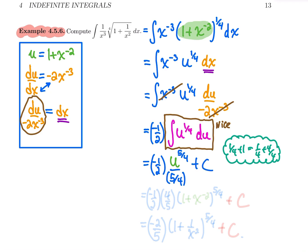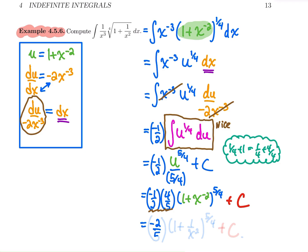That's the power rule applied, keeping the coefficient out front. If you're comfortable, simplify: the coefficient minus one half divided by five over four means multiplying by the flip, giving minus two over five times u to the power five over four plus c. Now replace u with the original formula: one plus x to the power minus two, all to the power five over four, plus c. Simplifying further, minus four over two becomes minus two, so we get minus two over five.